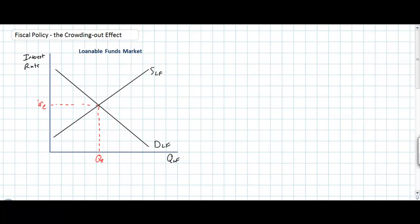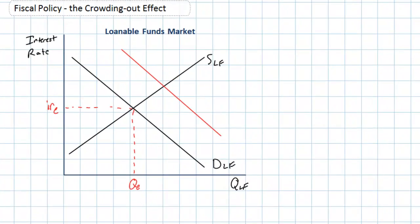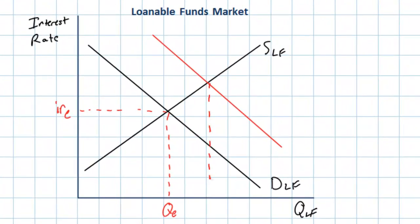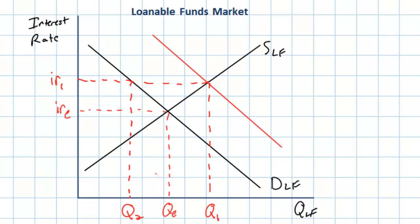This is our second video lesson on the crowding out effect of fiscal policy. In our first lesson we showed how a deficit finance fiscal policy causes an increase in the demand for private loanable funds, driving up interest rates paid by households and firms in the private sector. The increase in private interest rates resulting from the government's intervention in the market for loanable funds leads to a decrease in the quantity of loanable funds demanded by the private sector. In other words, households and firms will consume and spend less due to the higher interest rates resulting from the government's borrowing from the private sector in order to pay for its budget deficit.